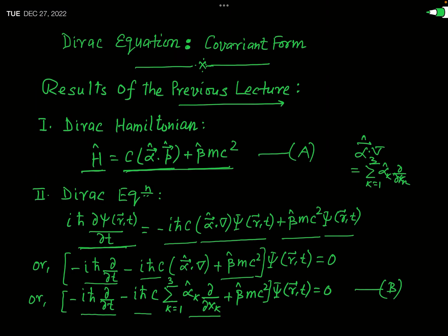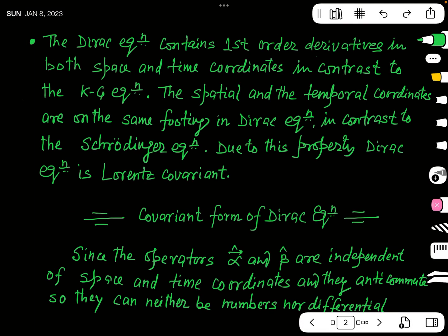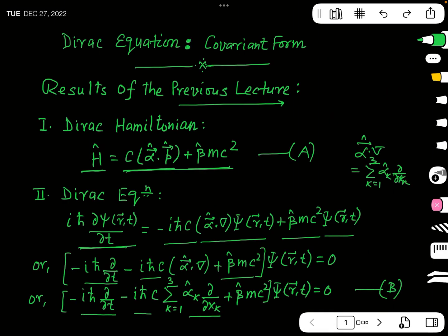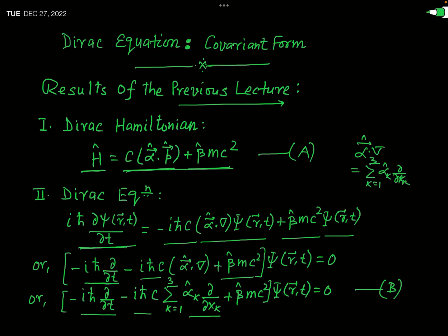The operators alpha and beta in the Dirac Hamiltonian are also related to the spin of particles and to the existence of antiparticles, or what you can call the negative energy state. Furthermore, this equation is first order in both time and space derivatives — the time derivative is ∂/∂t and the space derivative is ∂/∂xk — so time and space derivatives are on the same footing, both of first order.